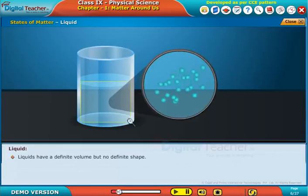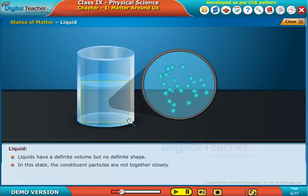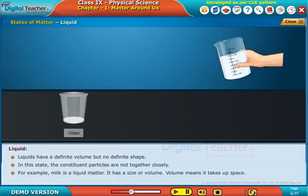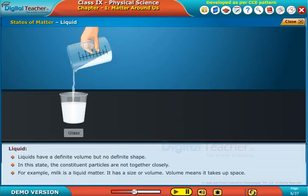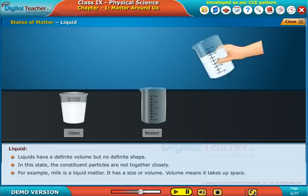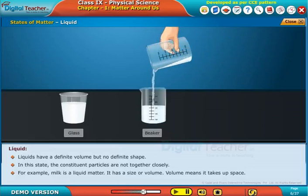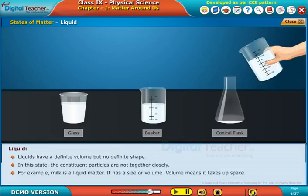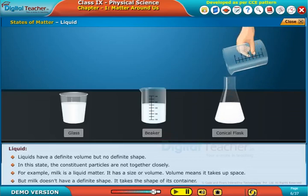Liquids have a definite volume but no definite shape. In this state, the constituent particles are not together closely. For example, milk is a liquid matter. It has a size or volume - volume means it takes up space - but milk does not have a definite shape.